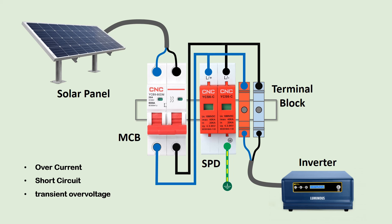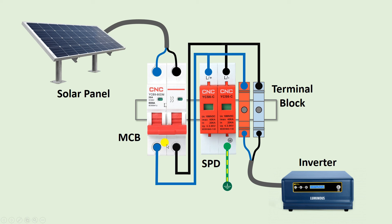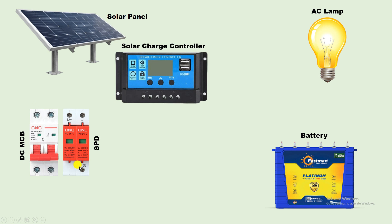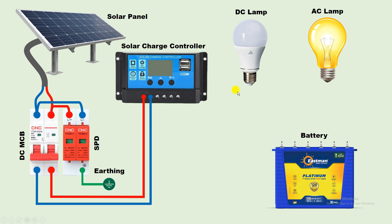Overall you will get three types of protection by using this DC DB box. Along with this, we can use this MCB for turning the power supply on and off. If you want to work on this inverter, you have to turn off the DC power supply — to do that, you can directly turn off this MCB.